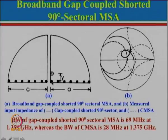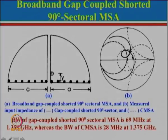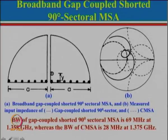By putting the short here, the field varies from 0 to double-plus, so the fringing field will be stronger and will get coupled to this particular patch. We have given one example here, and this is the comparison — the same radius a is taken for the circular microstrip antenna. For the circle we got 28 MHz bandwidth at 1.375 GHz. But by using this particular gap-coupled configuration, there is a loop and the bandwidth is 69 MHz.